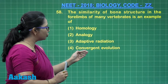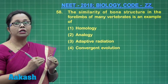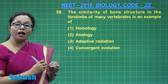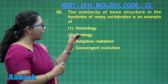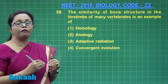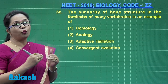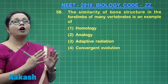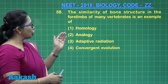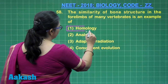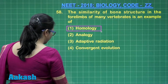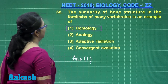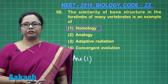Analogy leads to convergent evolution, where similar structures arise due to the same type of environmental pressure in unrelated species. Adaptive radiation is a method of speciation where one ancestral species radiates into many different species when vacant niches are available. So the answer is option 1, that is homology.